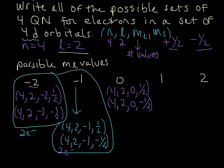Let's do m sub l equals 1, we're going to get 2 more sets. 4, 2, 1, then minus one half, so that orbital can hold 2 electrons.